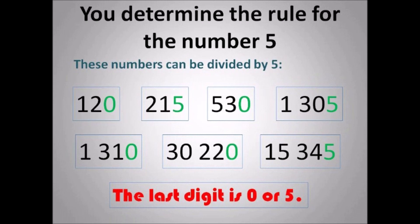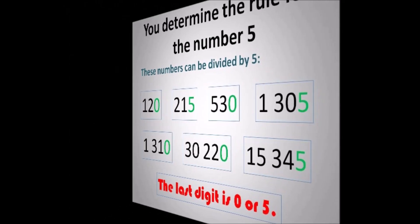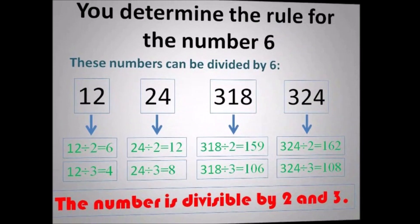You determine the rule for the number 5 — this one is an easy one too. Once it ends with 0 or 5, the number is divisible by 5. Straightforward. 5 and 10 and 2 are the straightforward ones. So once it ends with 0 or 5, it is divisible by 5.